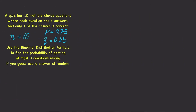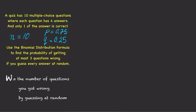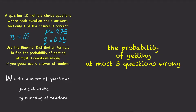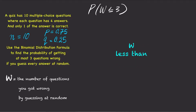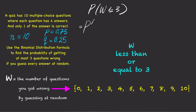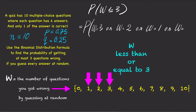Use the binomial distribution formula to find the probability of getting at most three questions wrong if you guess every answer at random. If we let w stand for the number of questions you got wrong, we write this as P(w ≤ 3). W less than or equal to 3 means w equals 3, or w equals 2, or w equals 1, or w equals 0.